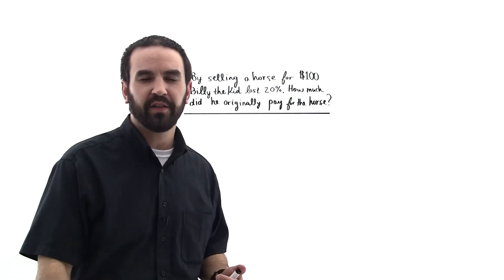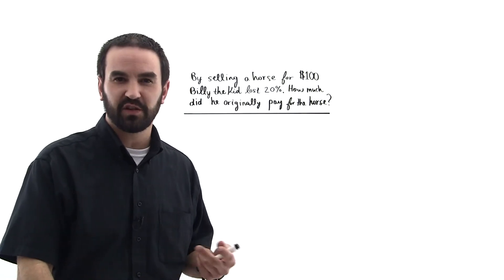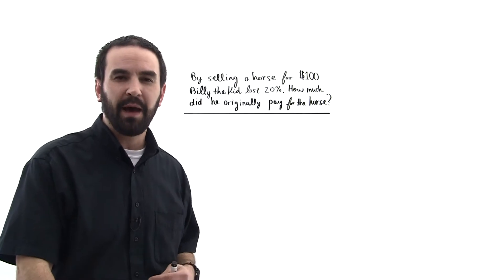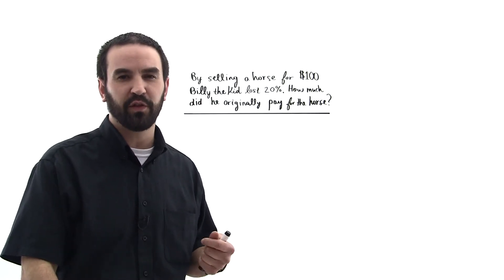By selling a horse for $100, Billy the Kid lost 20% on the sale. How much did he originally pay for the horse?